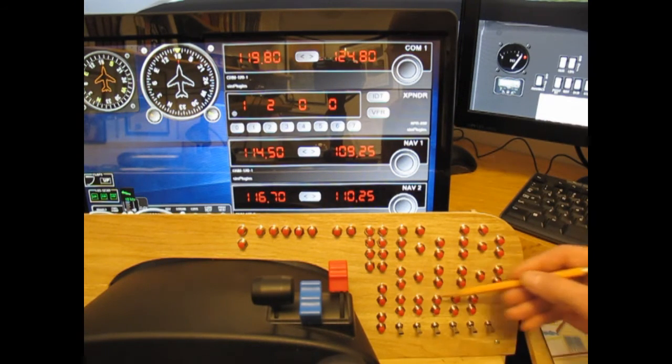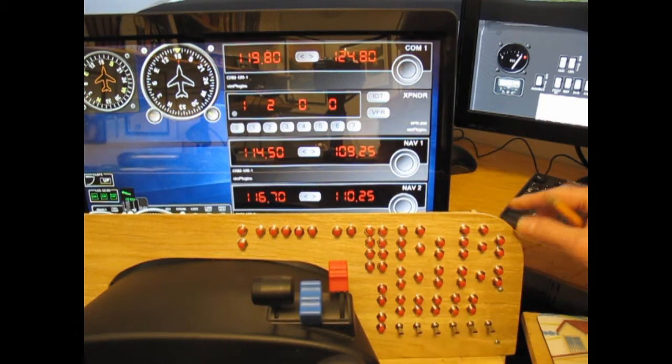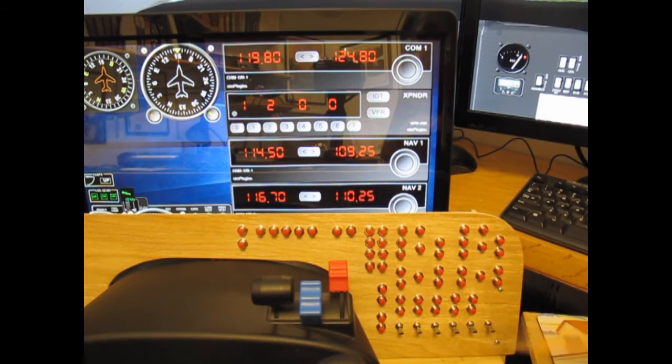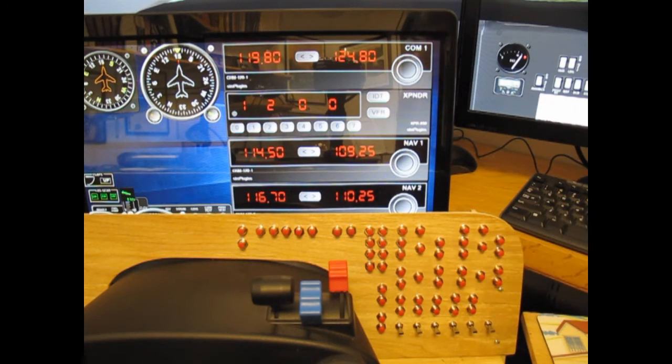Down here I have the transponder, and this turns it off and on, and then I can raise and lower the numbers with the transponder. So I just want to show that pretty much everything works. These switches here are all the lights, and over on the other side I have some other components.